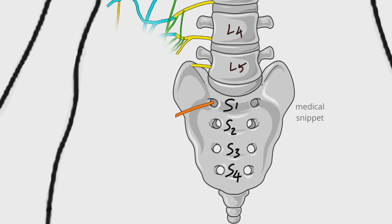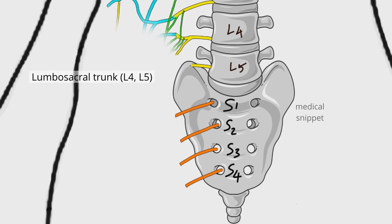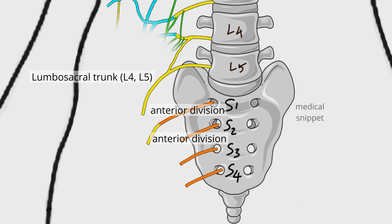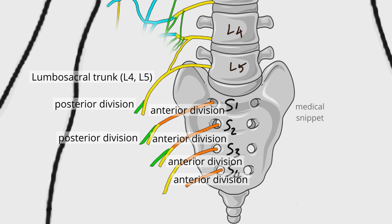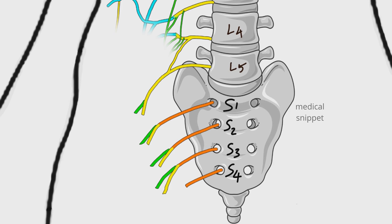The sacral plexus is formed by the ventral ramus of S1 to S4 spinal nerves and the lumbosacral trunk, which is formed by L4 and L5 spinal nerves. Each nerve forming the plexus divides into anterior and posterior divisions, except the S4 nerve. These divisions unite together to form five major peripheral nerves of the sacral plexus.